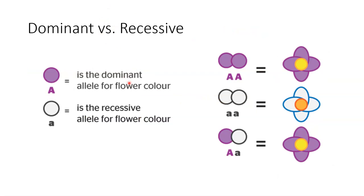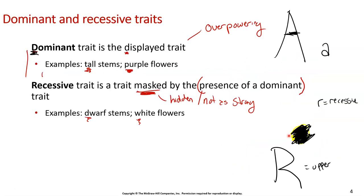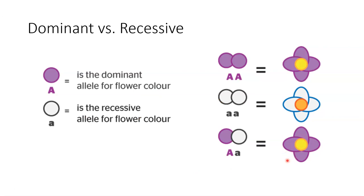Dominant is uppercase, recessive is lowercase. For eye color, brown is dominant and blue or hazel is recessive. If you have two dominant alleles — two uppercase letters — you'd have brown eyes. You need two recessive alleles to give you something like hazel or blue. When you have one dominant and one recessive allele together, you still only see the dominant allele because it's so powerful. That applies to flowers and to eye color.